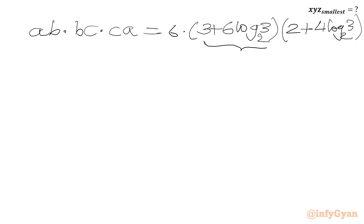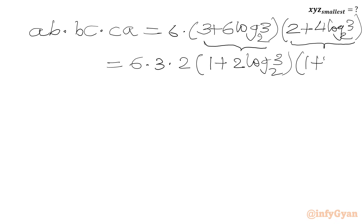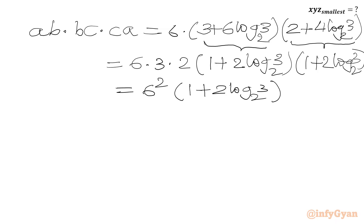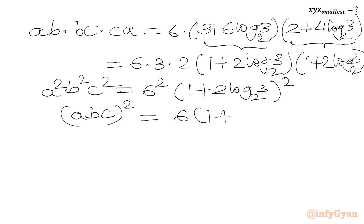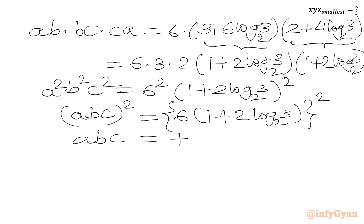Taking 3 common from the BC bracket gives 6 times 3 times 2, and in brackets we get (1 plus 2 log 3 base 2) times (1 plus 2 log 3 base 2). Since 6 times 3 times 2 equals 36, the LHS is A squared B squared C squared, so (ABC) squared equals 36 times (1 plus 2 log 3 base 2) squared, which equals 6 squared times (1 plus 2 log 3 base 2) squared. Taking square roots, ABC equals plus or minus 6 times (1 plus 2 log 3 base 2).